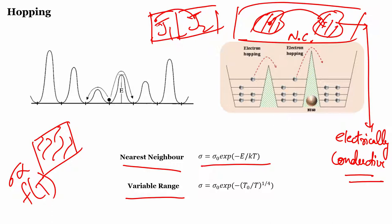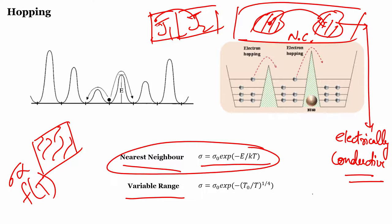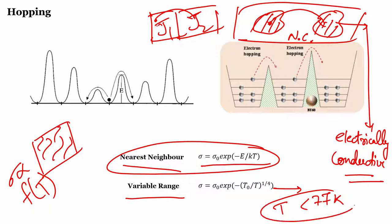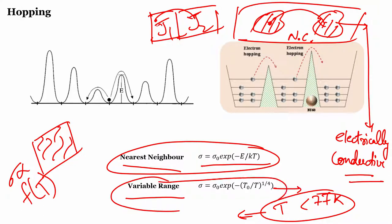Variable range hopping is found at very low temperatures compared to where nearest neighbor hopping is generally observed — typically less than or equal to 77 Kelvin, which is liquid nitrogen temperature. This is not a very standard value; I am just giving a rough idea. At this temperature, thermal vibrations are to a large extent quenched, and that is why variable range hopping is the preferred mode of transport.